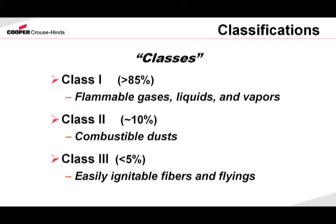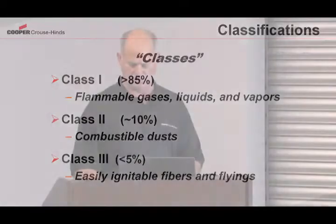Examples of these: in Class 1, flammable gases and vapors — refining applications, chemical plants, wastewater treatment plants. Class 2 locations would be grain elevators or flour mills. A Class 3 location — flyings and fibers — would be found in a textile mill or a cotton gin.